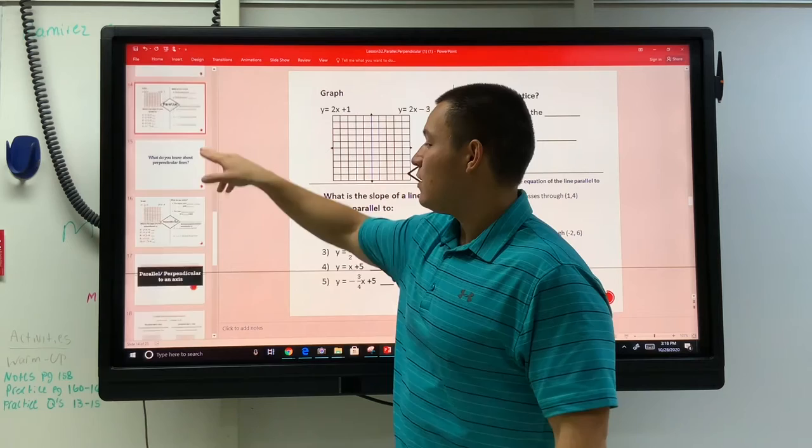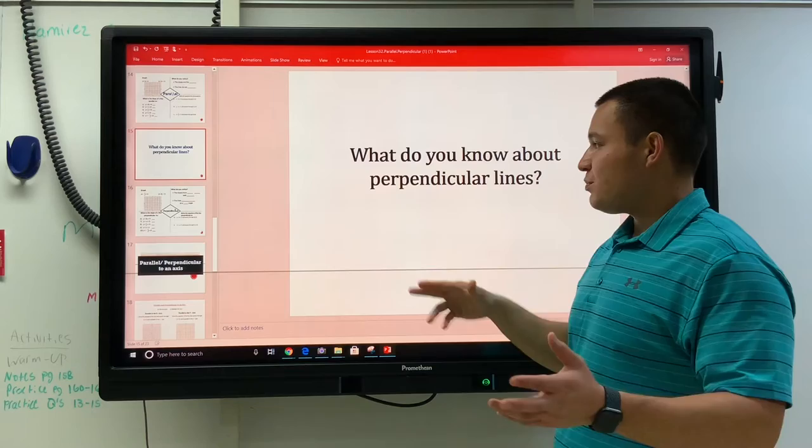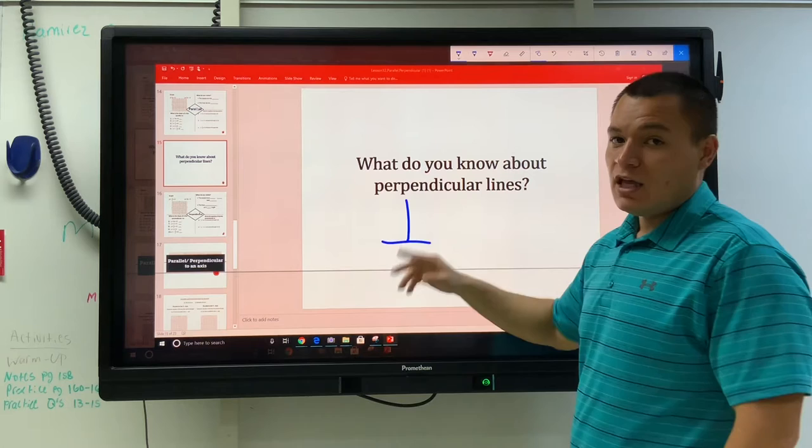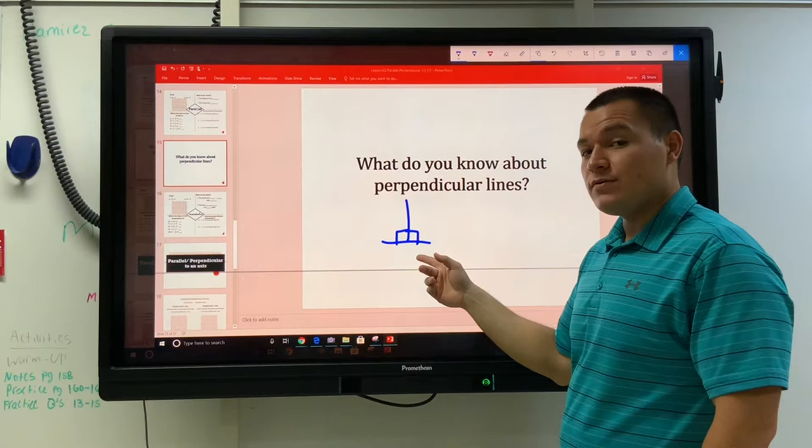So what about perpendicular? The symbol for perpendicular is this - it's an upside-down T. And what that upside-down T shows you is that there are 90 degree angles, there are right angles. Two things are going to touch, two lines are going to touch at a right angle.